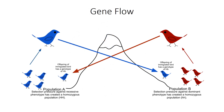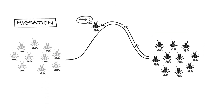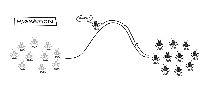Gene flow represents another way to change allele frequencies in a population. Imagine two populations: one is homozygous dominant (HH) for a blue color trait, and the other is homozygous recessive (hh) for a red color. When a bird migrates from one population to another, it brings in a new set of alleles, changing the allele frequency of that population. Gene flow is important for adding genetic diversity to a population — migration brings in new alleles, which create new combinations of alleles.